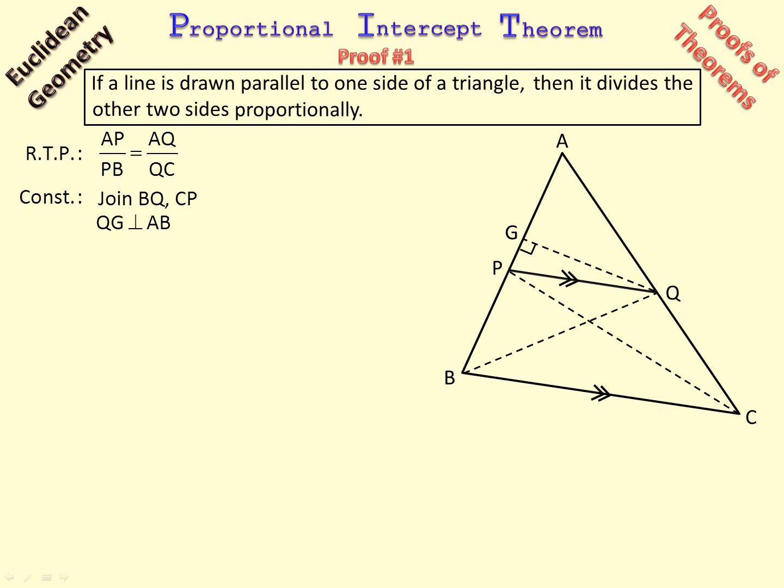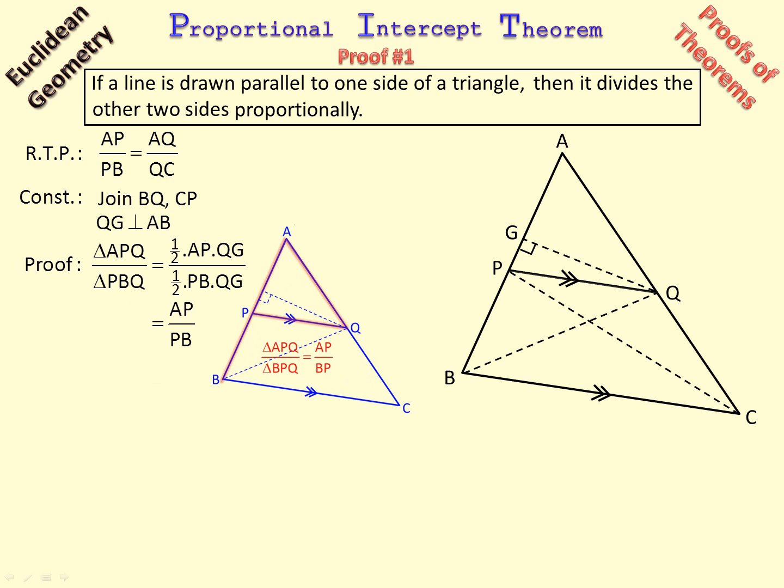Now remember our two facts: the first, two triangles sharing an equal height, and the second, two triangles between a pair of parallels. So we are going to use the first. Triangle APQ and triangle PBQ, there is the diagram. Those two triangles equal half AP times QG and this one is half PB times QG. The halves cancel, the QGs cancel, and we end up with triangle APQ over triangle PBQ equals AP over PB. This triangle here over this triangle here equals that side over that side because they have the same height.